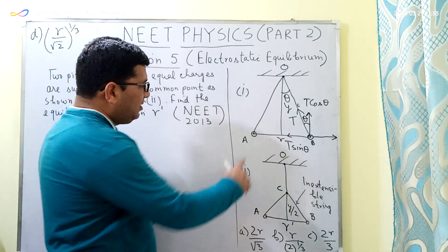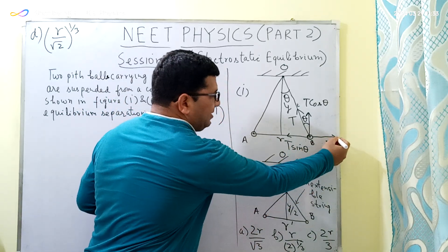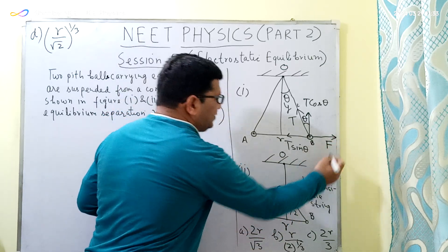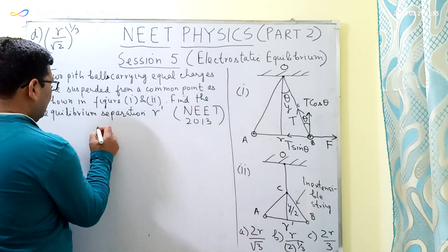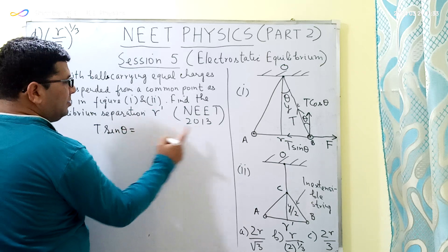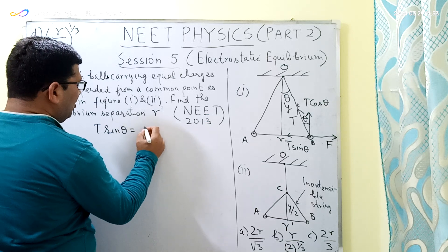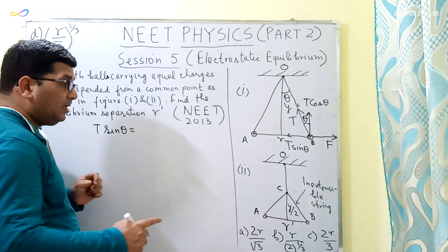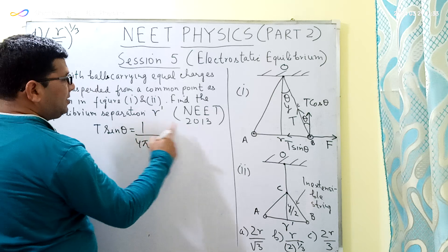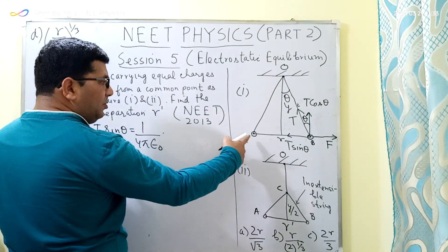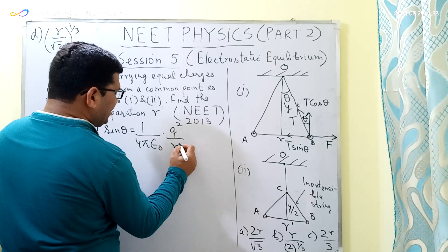There is also an electrostatic repulsive force between these two pit balls, directed outward as indicated by this arrow. I am taking this electrostatic force as F. In the case of electrostatic equilibrium, T sin theta is equal to the electrostatic force, given by 1 over 4 pi epsilon-0 times Q squared divided by R squared, where R is the equilibrium separation between them.